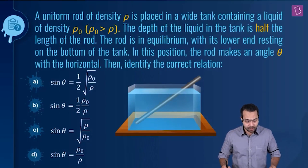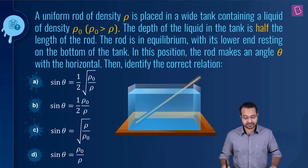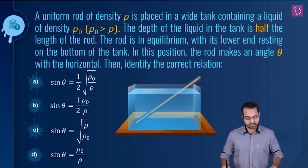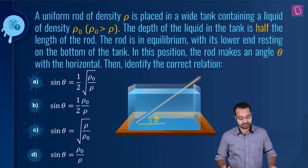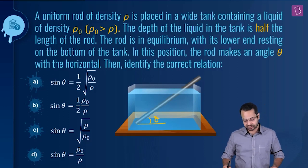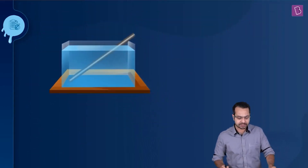The question is: a uniform rod of density ρ is placed in a tank containing a liquid of density ρ₀, where ρ₀ > ρ. The depth of the liquid in the tank is half the length of the rod. The rod is in equilibrium with the lower end resting on the bottom of the tank, and the rod makes an angle θ with the horizontal. We need to identify the correct relationship — find sin θ.